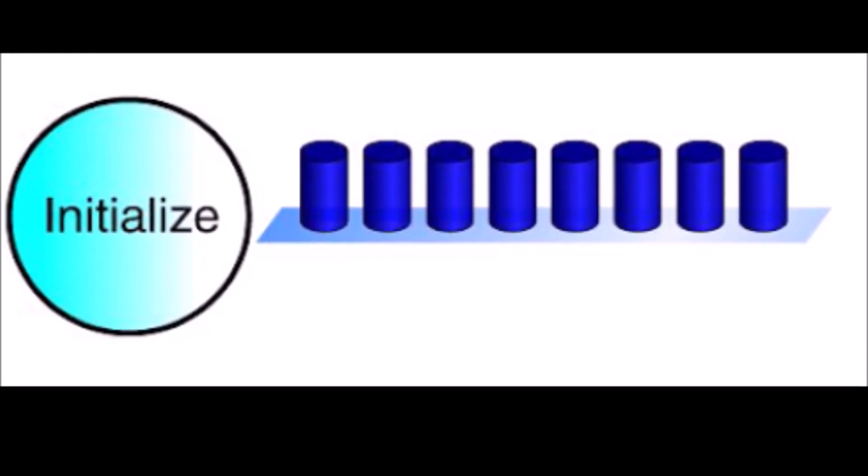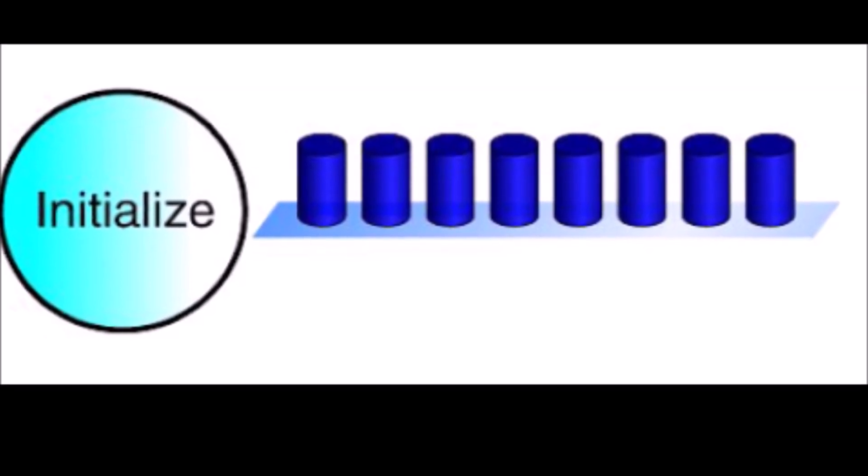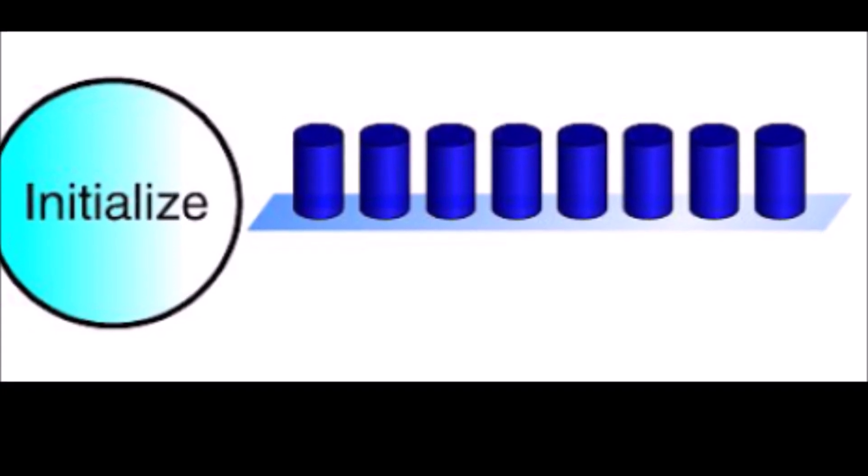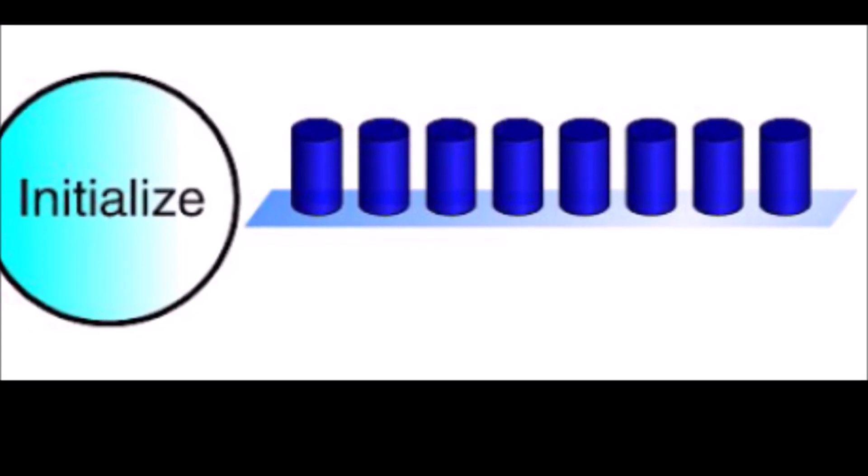Say you had an 8 qubit register. 2 to the 8 would be 64 entries, so you'd have 128 superimposed states that correspond with each place that an entry could be in that database.